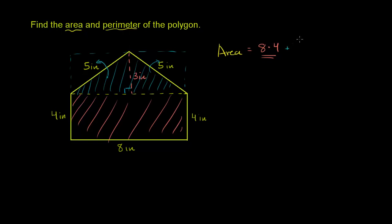So plus 1 half times the triangle's base, which is 8 inches, times the triangle's height, which is 4 inches. And so let's just calculate it.